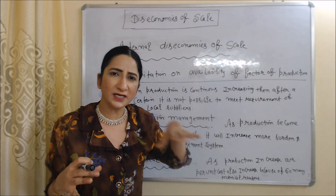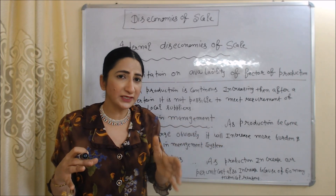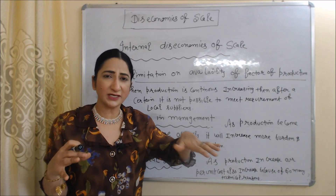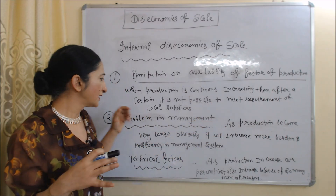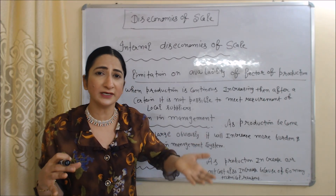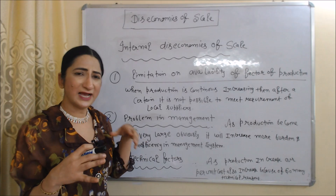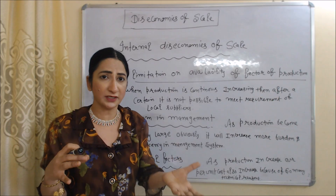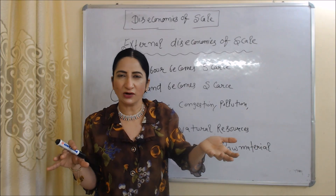When you are continuously increasing your production, after a certain point it is not possible to meet the requirement of raw material from local suppliers. That is why you have to get raw material from other locations at higher prices, which increases your cost. Next is problems in management: as production continuously increases, it obviously increases the burden and inefficiency in the management system. Last is technical factors: as production continuously increases, after a certain time period, per unit cost will increase because of many technical reasons.